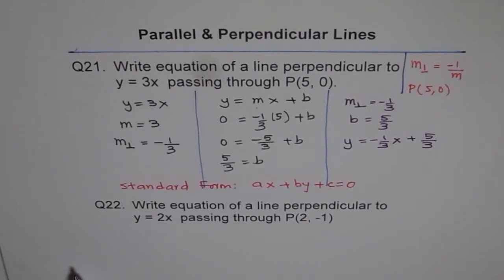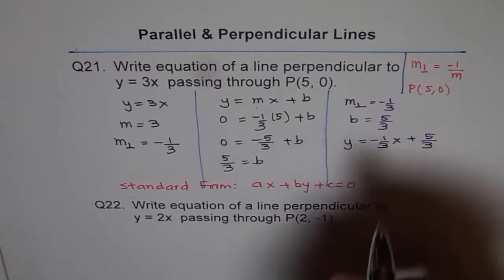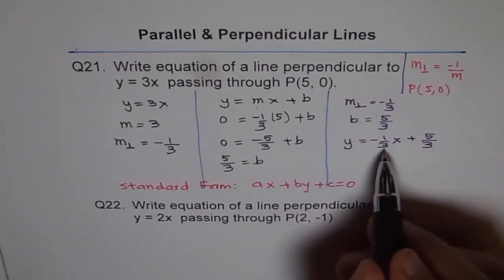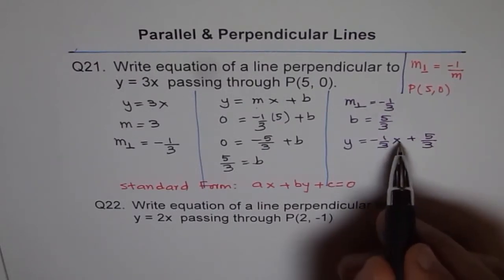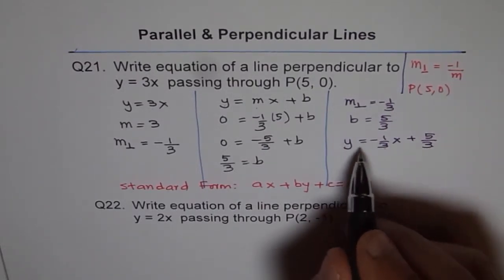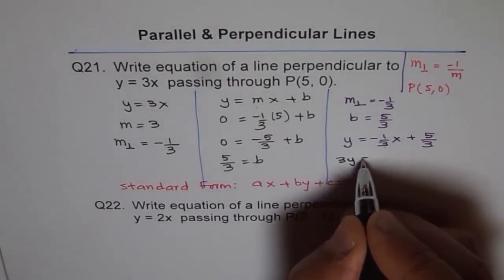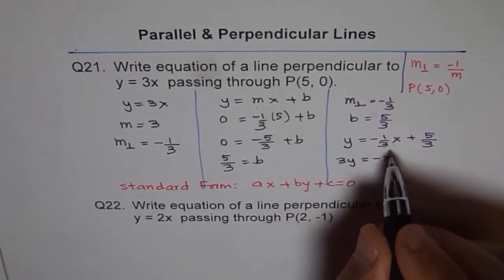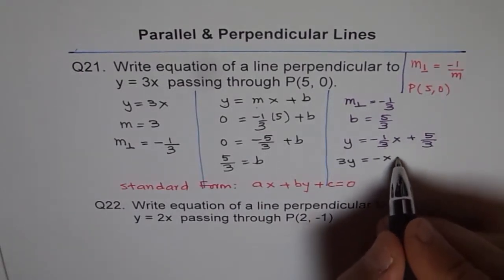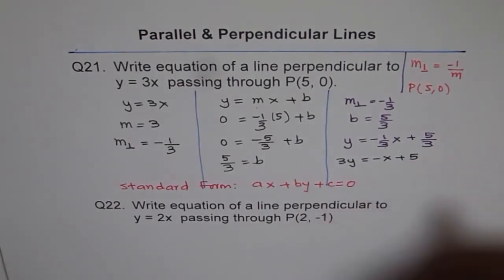So to write this in standard form, what we can do is, we can multiply everything by common denominator and then bring terms together. So if I multiply everything by 3, I get 3y equals minus x. There is no point writing 1 plus 5. This is the first part.